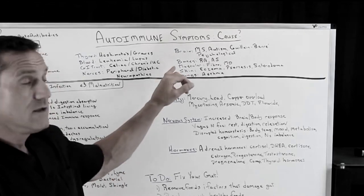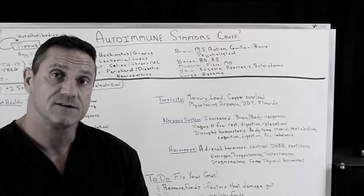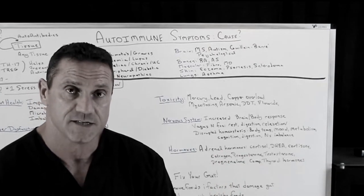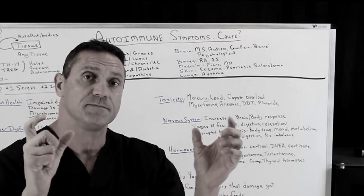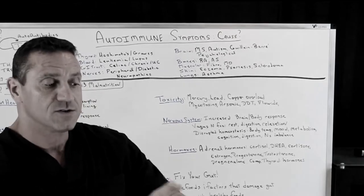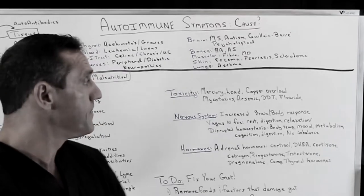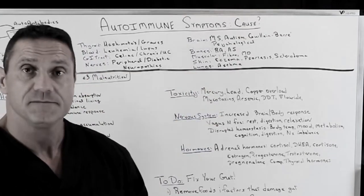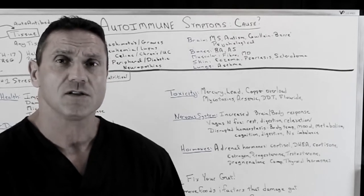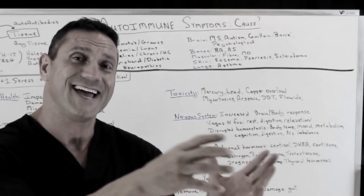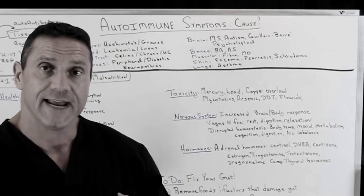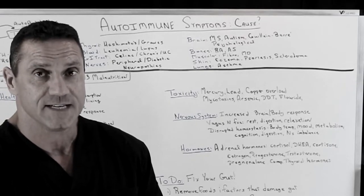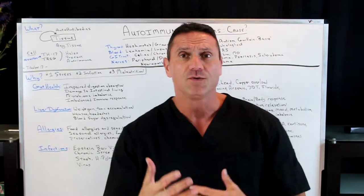Bones: rheumatoid arthritis, ankylosing spondylitis. Remember, the difference between rheumatoid arthritis and regular osteoarthritis is that rheumatoid arthritis is always bilateral, where osteoarthritis is always just unilateral. Muscular: fibromyalgia, muscular dystrophy. Skin: eczema, psoriasis, scleroderma — these are all autoimmune diseases where your cells are attacking the skin. The lungs: asthma. A lot of people didn't realize that asthma is autoimmune — yes, it's an autoimmune condition.